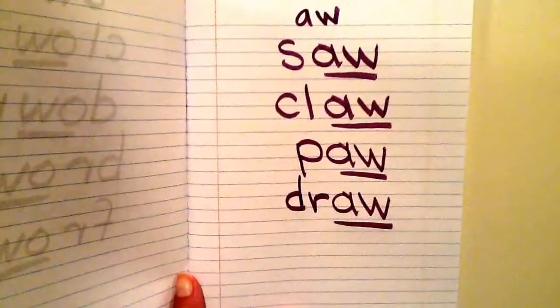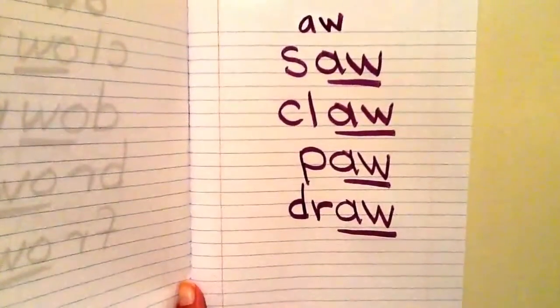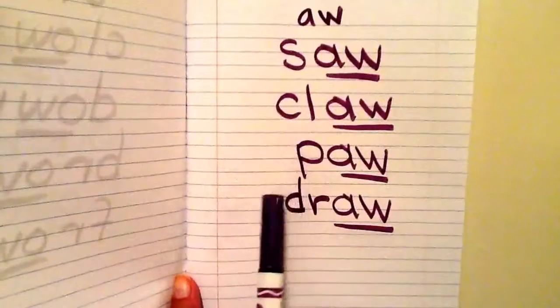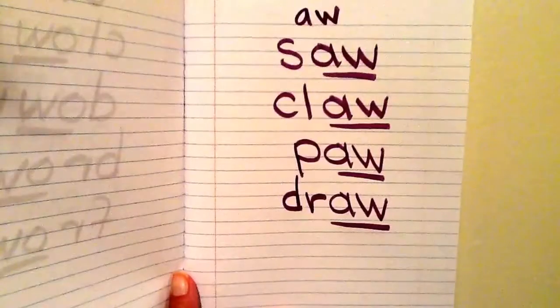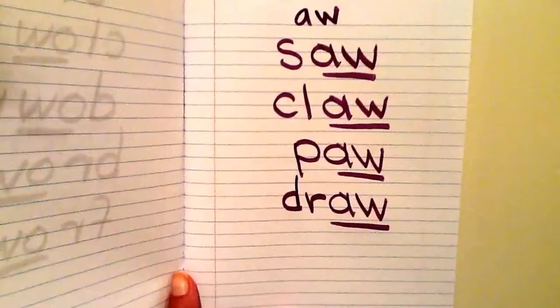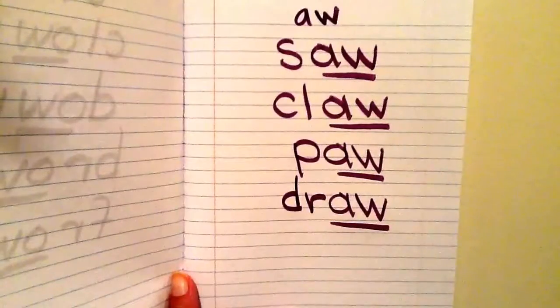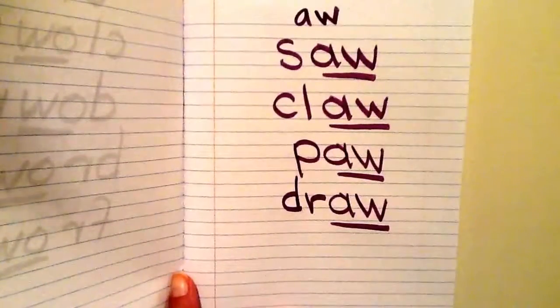Let's go ahead and read through our list of words that have AW making the AW word pattern: saw, claw, paw, and draw. What I want you to remember is that one of the ways to make the AW sound in words is with A-W. And when you find words making AW in your reading or writing, please open up your word study notebook and add it to it, please.